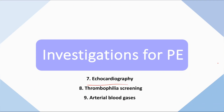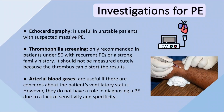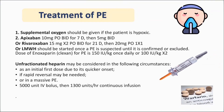Echocardiography is useful in unstable patients. In massive pulmonary embolism, there will be right ventricular dilatation on echo. Thrombophilia screening is only recommended in patients under 50 with recurrent pulmonary embolism and a strong family history. It should not be measured acutely because the thrombus can distort the results — perform it later, not in the emergency department. ABG is useful to assess ventilation but is not very helpful to include or exclude pulmonary embolism as a diagnosis.